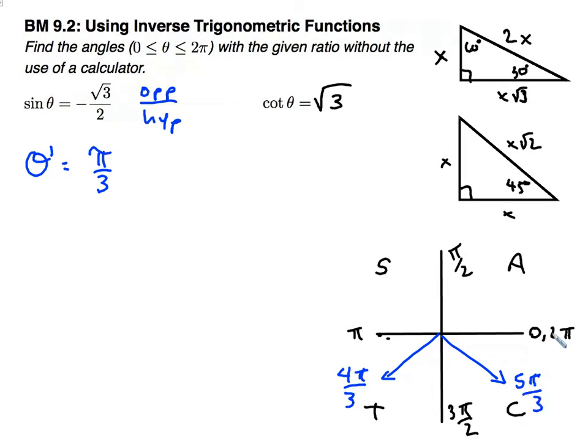And 5 pi over 3 is my next angle. 5 pi over 3. And then I get to 6 pi over 3, which simplifies to 2 pi. So it appears that my two answers are 4 pi over 3 and 5 pi over 3.